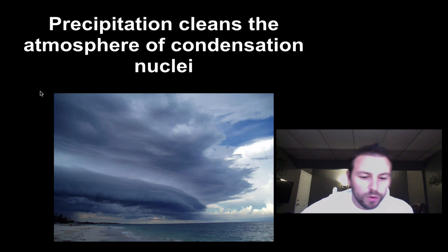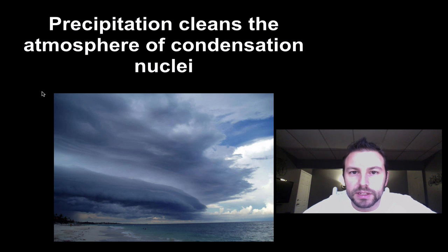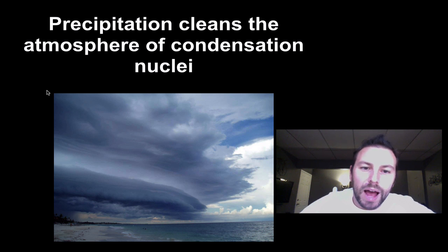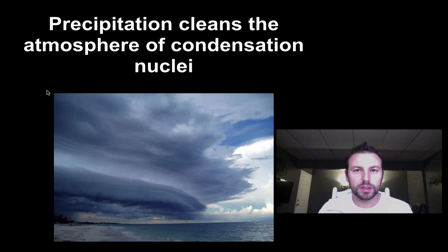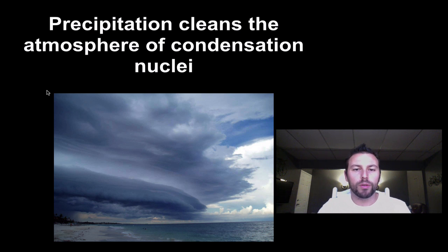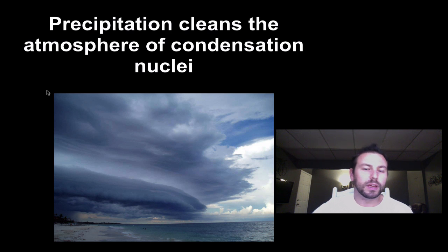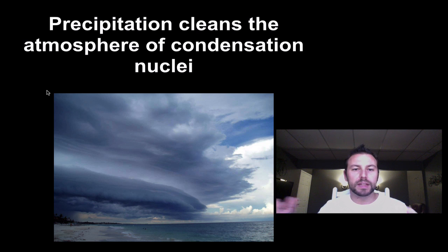What we do notice, though, is that clouds, because they condense around condensation nuclei, basically clean the atmosphere. As condensation occurs, they condense around these little dust and smoke particles, and then eventually all those particles add up, start colliding with each other, become heavy enough, and then they fall through the sky and enter the ground or other bodies of water. So essentially, when clouds form and it rains, it pulls any of that dust and particles out of the air and brings it towards the ground.